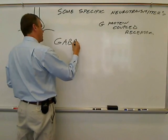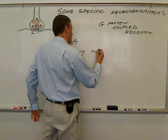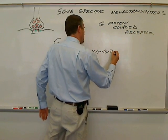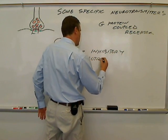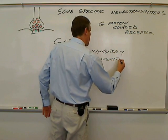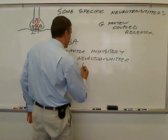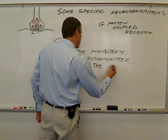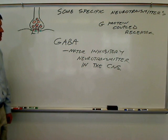Another neurotransmitter I want you to know a little bit about is GABA. GABA is the major inhibitory neurotransmitter in the CNS — in the brain. And that's really all I want you to know about it, at least at this point.